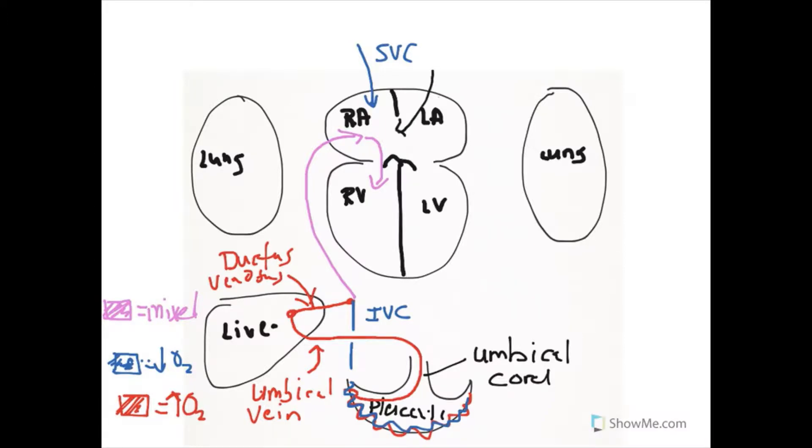The second option is we have a shunt, a fetal shunt located in the interatrial septum called the foramen ovale. The foramen ovale closes up after birth, but this is a left-right shunt that allows blood to pass into the left atrium to shunt blood away from the lungs.